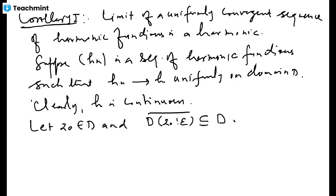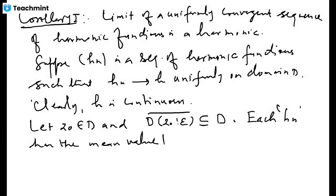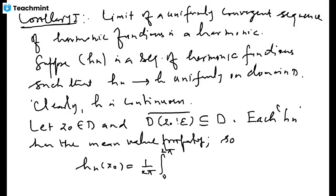Each hₙ is a harmonic function, so each hₙ satisfies the mean value property. That means hₙ(z₀) = (1/2π)∫₀²π hₙ(z₀ + re^{iθ}) dθ for any r with 0 < r < epsilon. Now let's apply the limit to both sides as n → ∞.